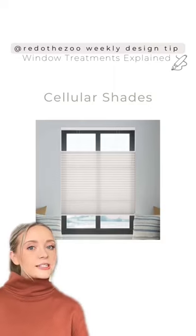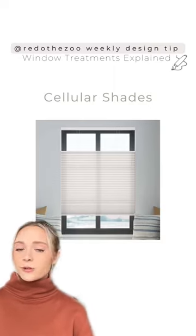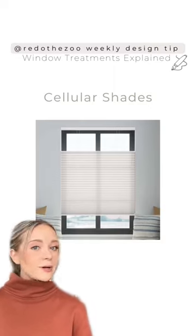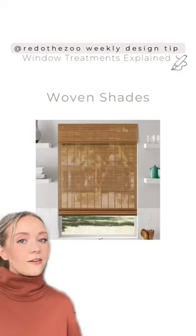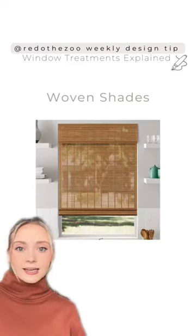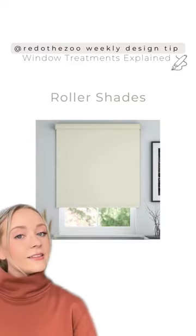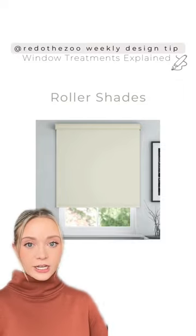Here we have cellular shades, which are really good for insulating and feature that really cool top-up bottom-down feature. Then we have woven shades, which are always awesome for adding some texture. And lastly, you have your classic roller shades.